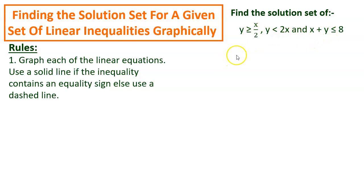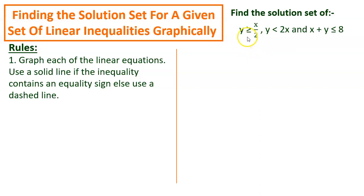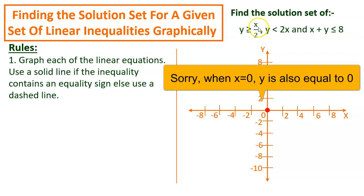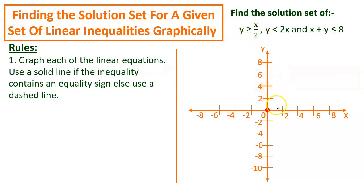There are three inequalities given, so we will be converting them to their respective equations. The first one becomes y equals x over 2, and we have to graph this equation. It will be a straight line graph, and it will be a solid line because this inequality contains the equal to sign. We take the x and y axes and need two points lying on the line y equals x over 2. The first point taken is the origin, because when x equals 0, y is also equal to 0.